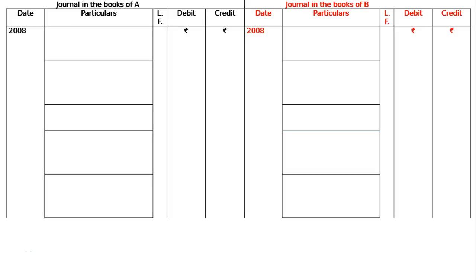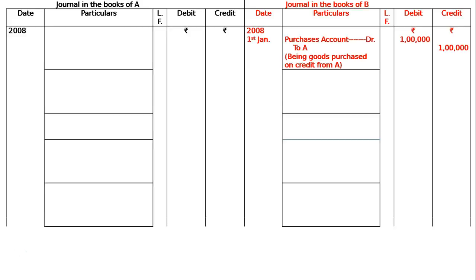This question is: on 1st January 2008, A sold goods to B for Rs. 1 lakh, received Rs. 25,000 in cash. First of all, we need the sales entry in the journal in the books of A, and journal in the books of B. Draw the proper format. In the books of B, this will be purchases account debited to A.